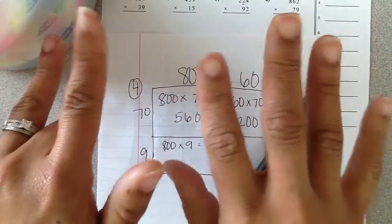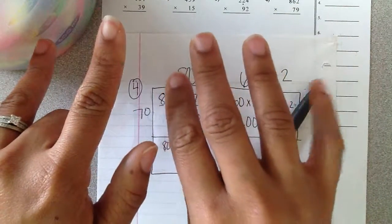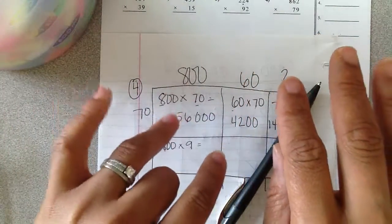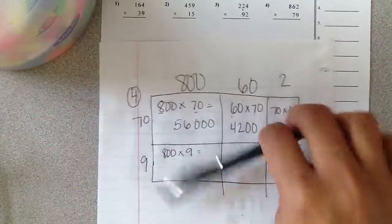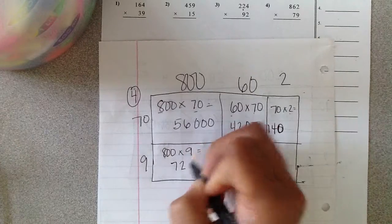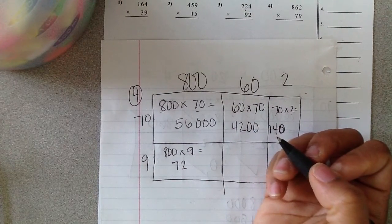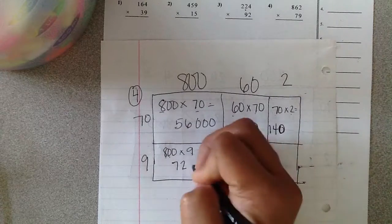These count as your tens. So I have ten, twenty, thirty, forty, fifty, sixty, seventy. And these are your ones. One, two. So eight times nine is seventy-two. That's always a great trick if ever you're confused by the bigger factors that you have to multiply by nine. So seventy-two and I add two more zeros.